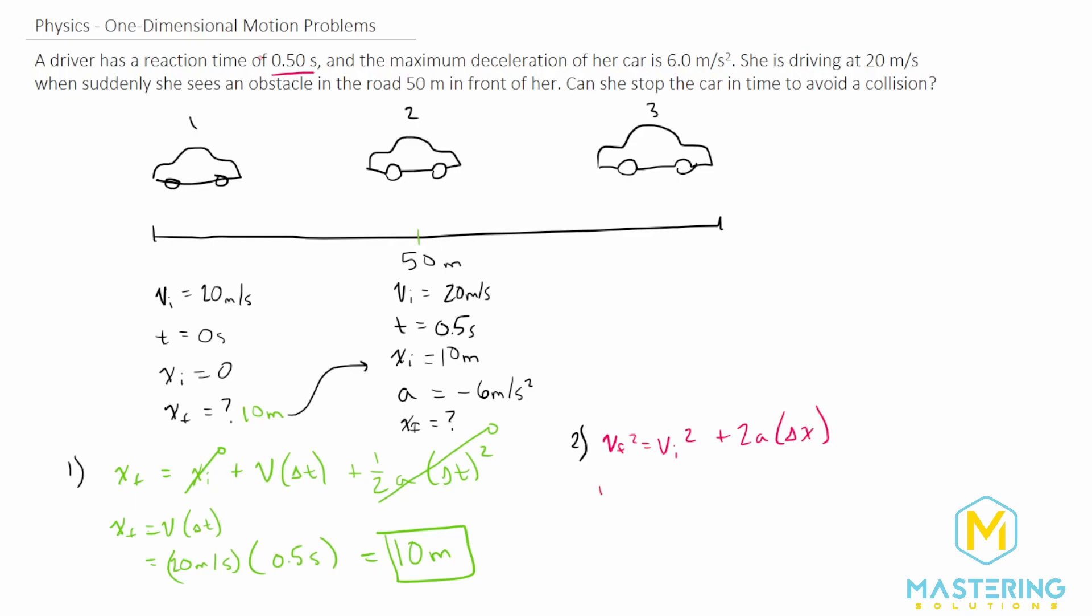So we have v final squared, we'll move that over minus v initial squared is equal to 2a delta x. We'll divide both sides by 2a. So delta x now is equal to v final squared minus v initial squared over 2 times the acceleration.